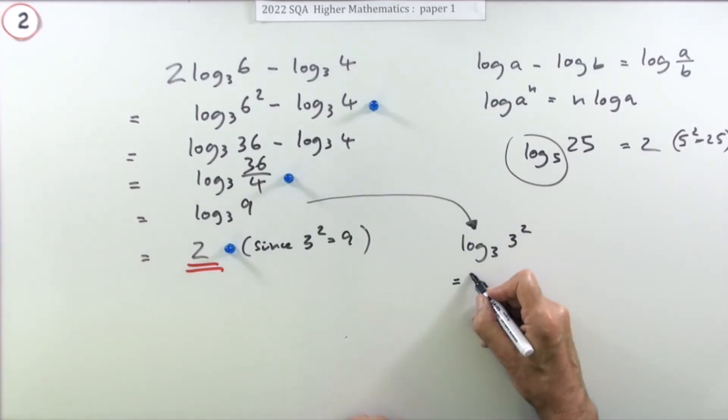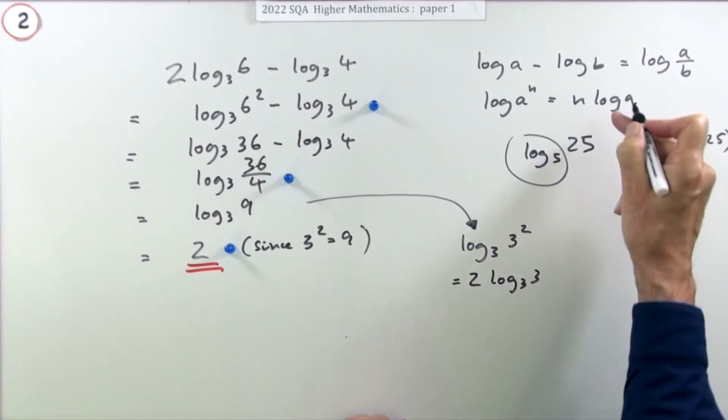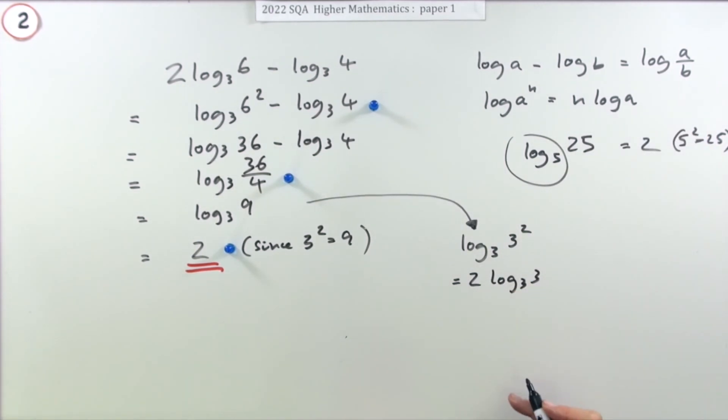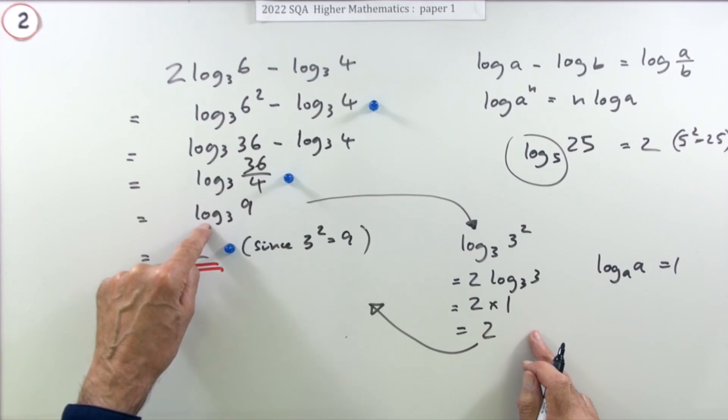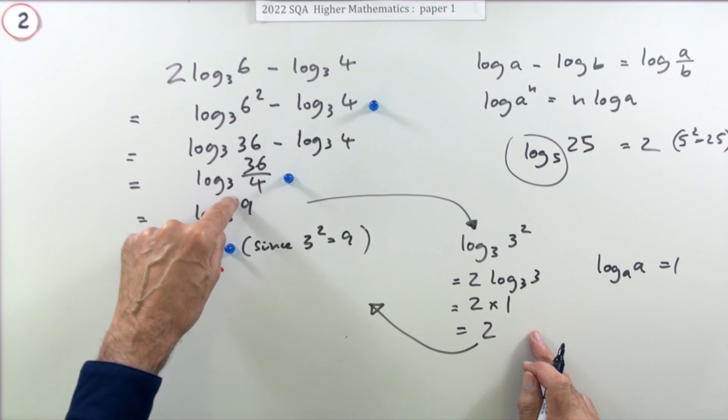But you could then say, well, that's 2 log 3 of 3 using that rule extracting the power. And then you could use the fact that log a of a for any base is always 1 to say it's 2 times 1, which then gives you 2. Do that if you wish, but according to the marking scheme it's quite sufficient to go from there straight to there just by understanding what log means. The logarithm is a function which says what power has been used to get this number that you've just put in beside me.